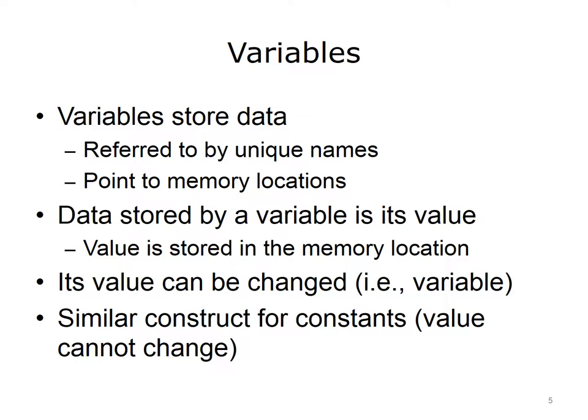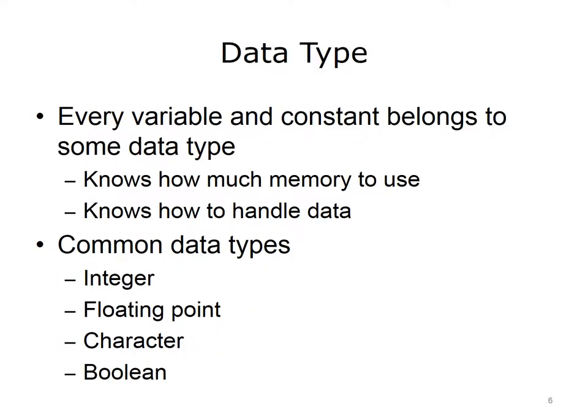There is a similar construct that holds values that remain the same during program execution. These are called constants. They, too, are stored in memory, but their values cannot be changed. Every variable and constant belongs to some data type. This refers to what kind of data the variable or constant can be assigned. Data types can be integers, which are whole numbers, floating point numbers, which are numbers with a decimal part, characters, which are any alphanumeric single character, and boolean values, which are either true or false, among others.